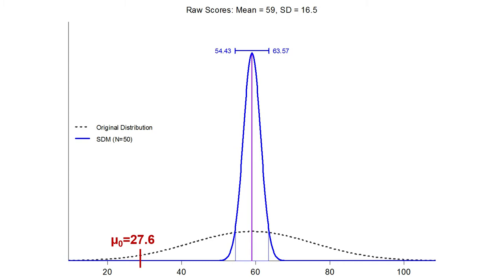That's our confidence interval. The null hypothesis value is the average for action adventure TV — 27.6 — saying Buffy is no more violent than average, nothing to see here, business as usual. The alternative hypothesis: yes, more violent than average.